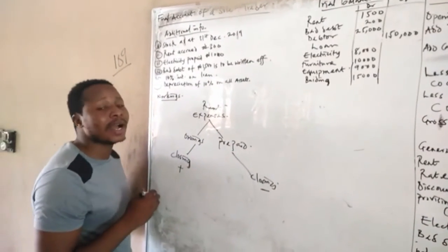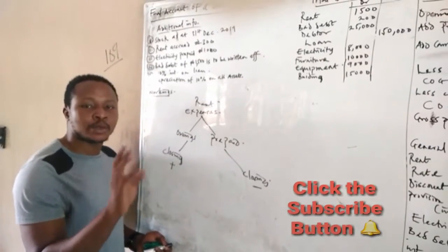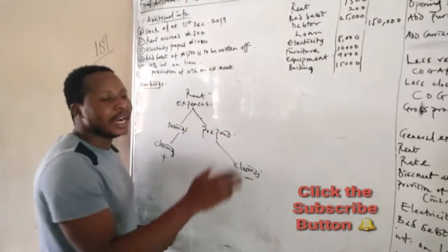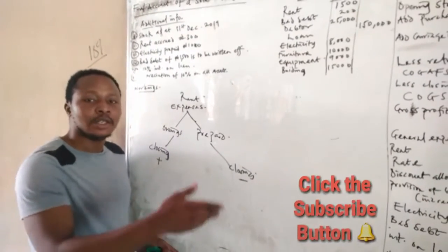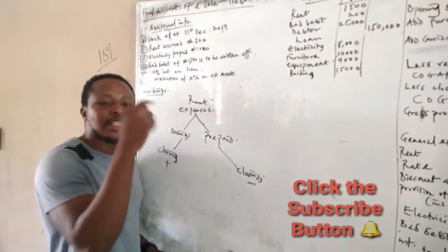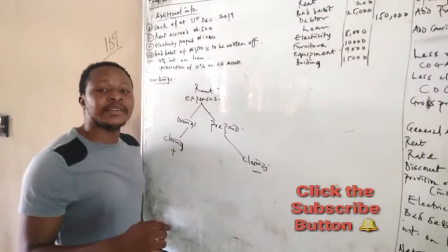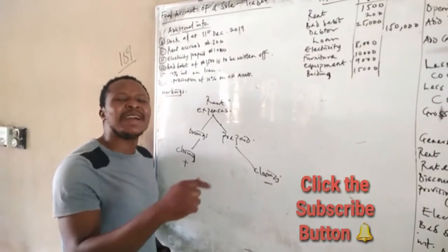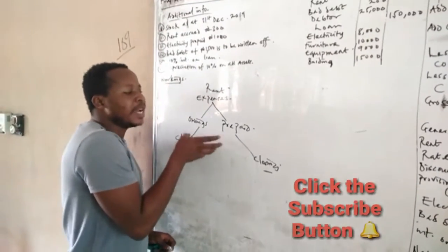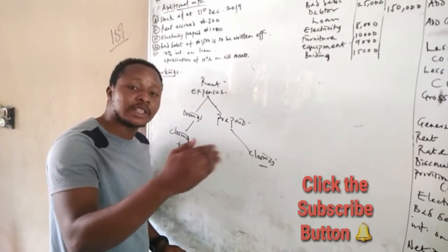The reason we add or subtract is because our accounting period is 12 months. If rent is owing in the additional information, you add it because the trial balance figure is short of 12 months. If rent is prepaid, you subtract it because you've paid more than 12 months and must adjust back to 12 months.